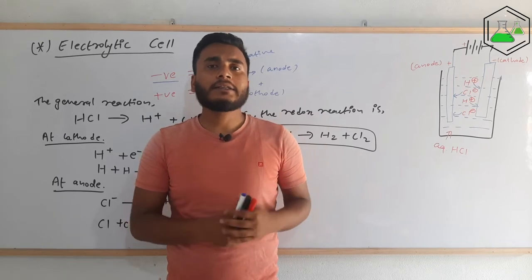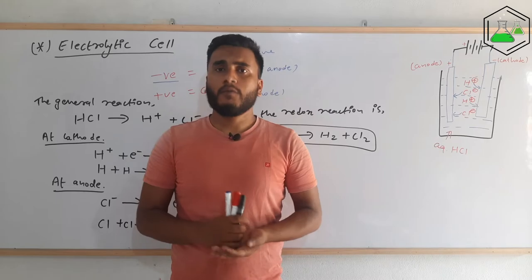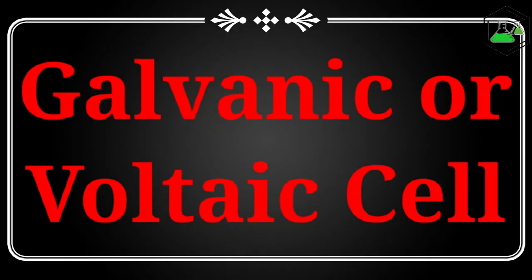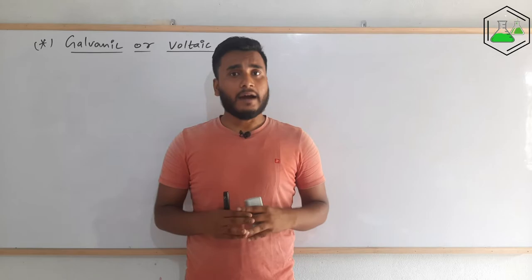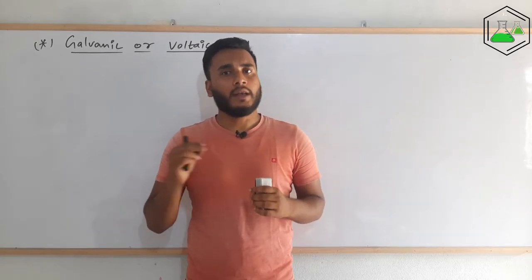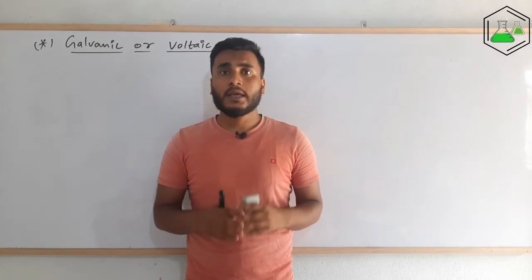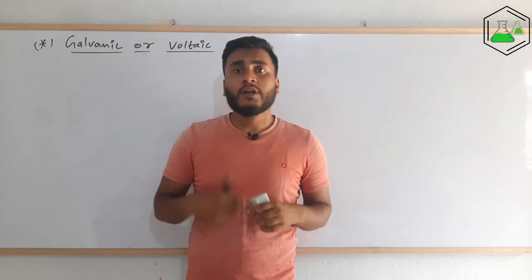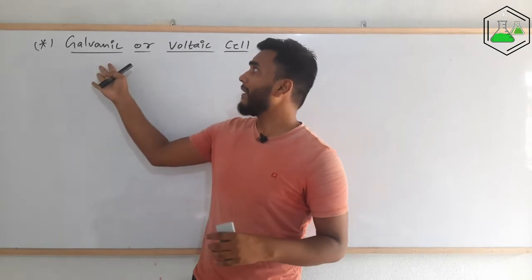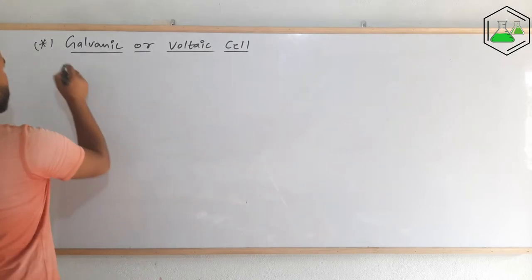Now let's look at the other type of electrochemical cell — the galvanic or voltaic cell. This is the device in which chemical energy is converted into electrical energy. Simply put, it is the device in which electrical energy is produced due to a chemical reaction, and it is called a galvanic or voltaic cell.